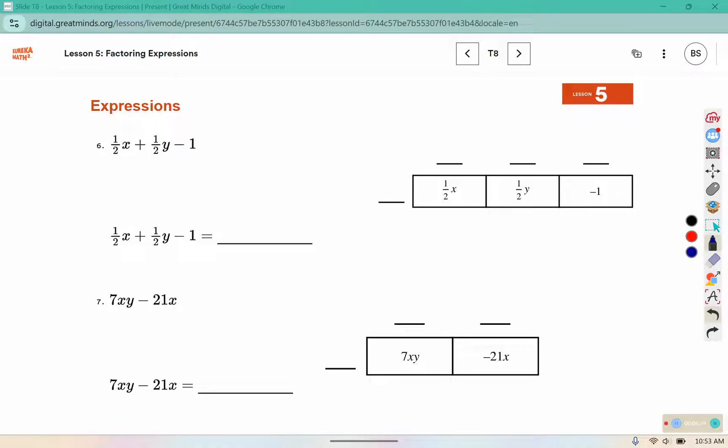So, for this one, we're going to choose 1 half. 1 half times x gives us 1 half x. 1 half times y gives us 1 half y. And 1 half times 2 would give me 1, but 1 half times negative 2 gives me that negative 1.